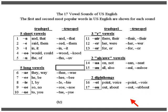And those are the seventeen vowel sounds of USA English. There are forty sounds in English total, and seventeen of them are vowels, with twenty-three consonants.